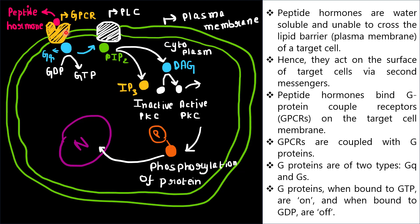Peptide hormones bind G-protein coupled receptors, or GPCRs, on the target cell membrane. GPCRs are coupled with G-proteins. G-proteins are of two types: GQ and GS. G-proteins when bound to GTP are on, and when bound to GDP are off.